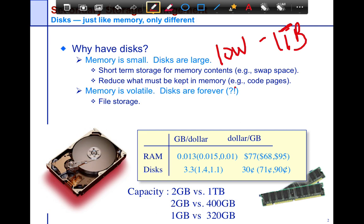Because disks are non-volatile and persistent, they're used to keep things around when you want to pass data between processes and applications. Disks have certain specific performance characteristics — they work really well when you access data in a sequential fashion, but if you want random access or non-sequential access, then performance doesn't keep up.